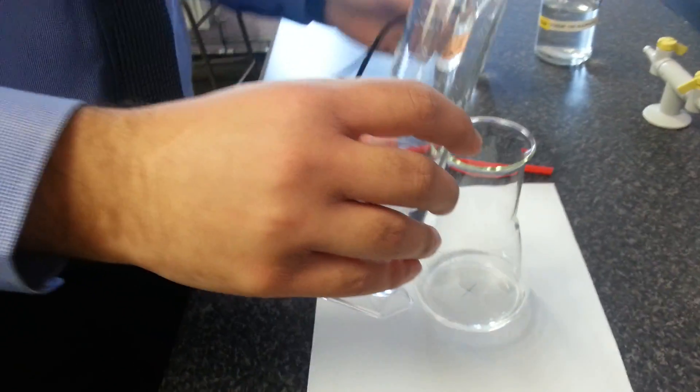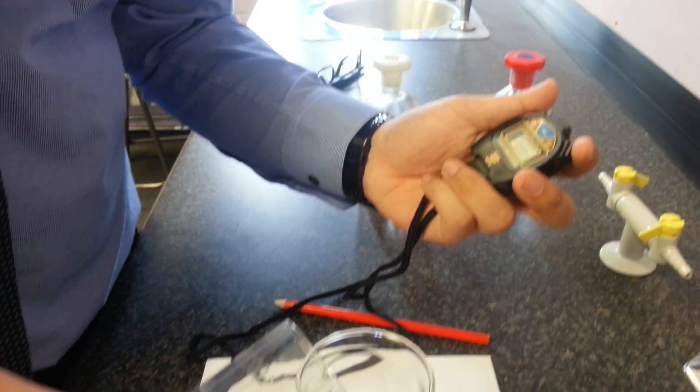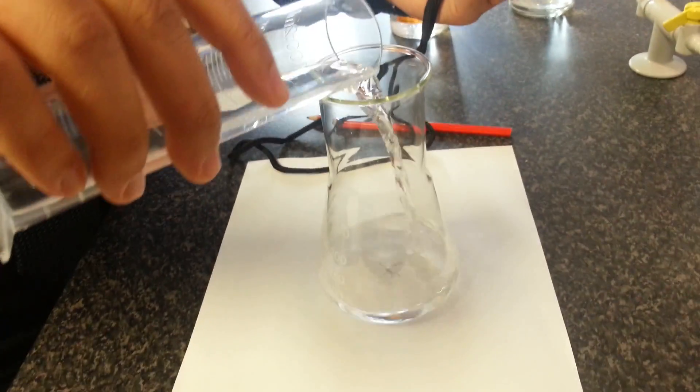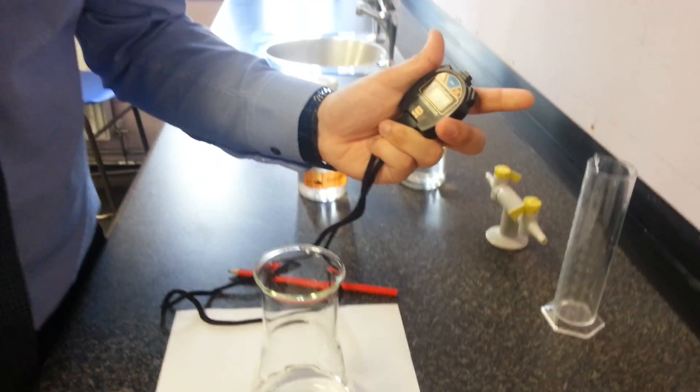Then you're going to pour it. Make sure you have a stopwatch in one hand and pour the hydrochloric acid on top and start the stopwatch at the same time.